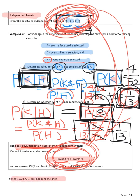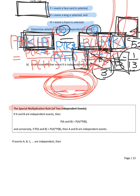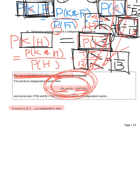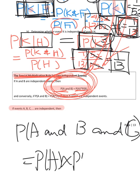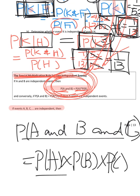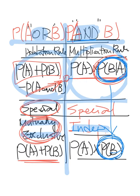And the very last one: when we have three events or more, when they are independent of each other, then the probability of A and B and C would be the same as just taking the multiplication separately — P(A) times P(B) times P(C). Today we complete the table: OR and AND, the general one and the special one. We're done. Thank you.